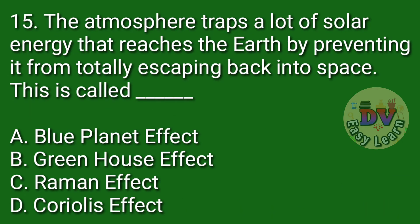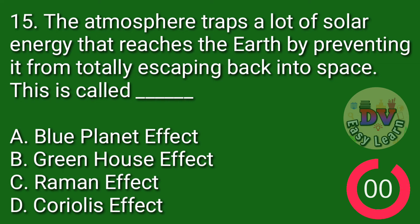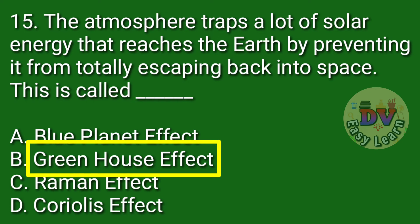Question number 15. The atmosphere traps a lot of solar energy that reaches the earth by preventing it from totally escaping back into space. This is called — Correct answer: Greenhouse effect.